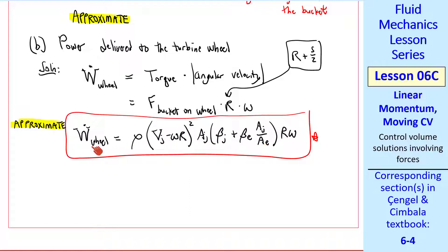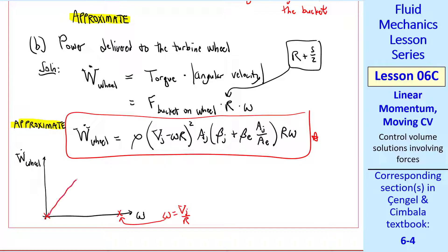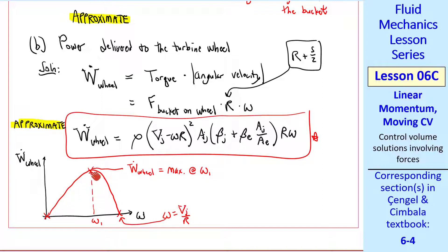We can do an interesting engineering analysis: what omega maximizes power? When omega is 0, w-dot_wheel is 0. When omega R equals vj, w-dot_wheel is again 0. The power curve has a maximum at some intermediate omega_1. Physically, if the wheel isn't rotating there's no power since power requires both force and motion. At the other extreme, if omega R equals vj, the bucket feels no jet impact. The maximum power occurs somewhere between these extremes — that's the operating point for a Pelton wheel. Note this is an approximation; a non-inertial frame analysis would be more accurate but is beyond the scope of this course.